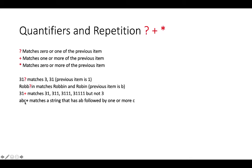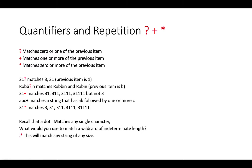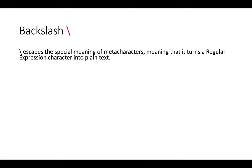Similarly, 'abc+' matches a string that has 'ab' followed by one or more 'c'. '31*' matches '3', '31', '311', and so on, because star matches zero or more of the previous item. Remember, the dot matches any single character — so what would you use to match a wildcard of indeterminate length? 'dot star' (.*)  will match any string of any size, because dot can be any single character and star makes it repeat flexibly.